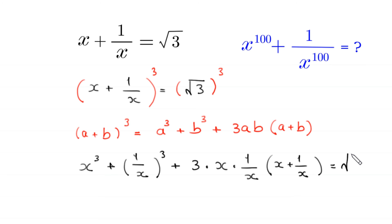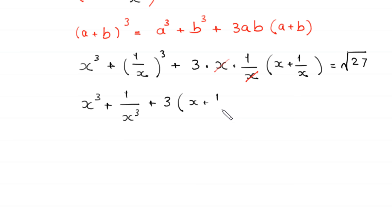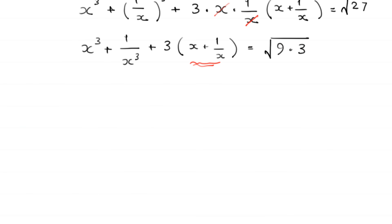This equals the square root of 3 cubed, which becomes square root of 27. The x cancels with 1 over x, and the left-hand side becomes x cubed plus 1 over x cubed plus 3 times x plus 1 over x, equal to square root of 27. Square root of 27 can be written as square root of 9 times 3.